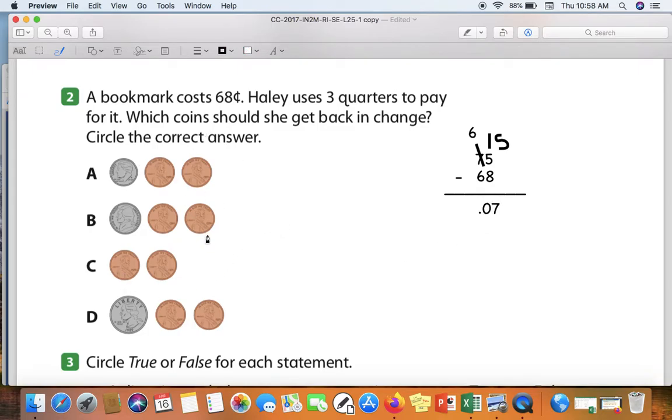Over here, which one of these equals seven cents? That's right. Letter B. Five, six, seven. It's letter B. A nickel and two pennies make seven cents. That's how much they should give me back.